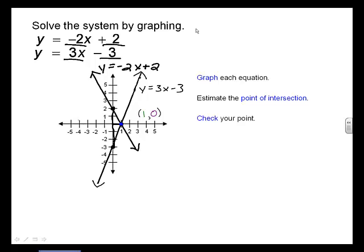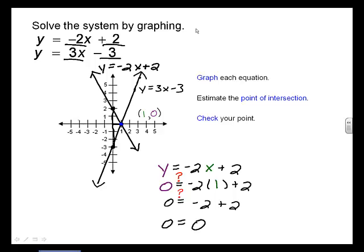Now, check your point. First, check your point in the equation y equals negative 2x plus 2. Plugging in your point, you need to check that 0 equals negative 2 times 1 plus 2. Evaluating negative 2 times 1, you need to check that 0 equals negative 2 plus 2. Evaluating negative 2 plus 2, you get 0 equals 0, and your solution checks out.